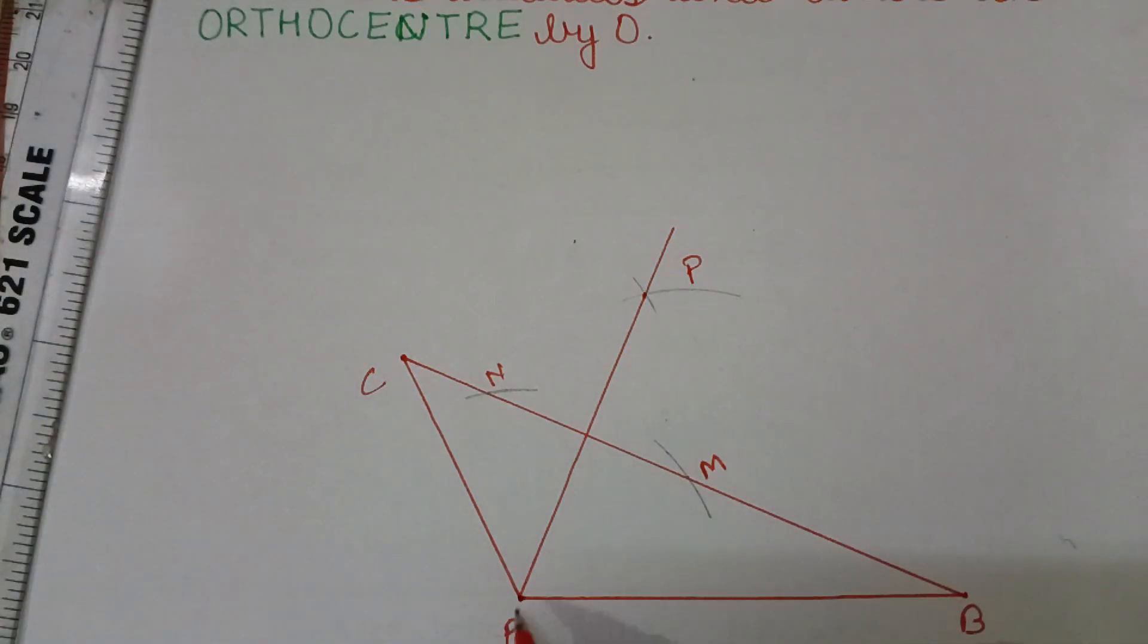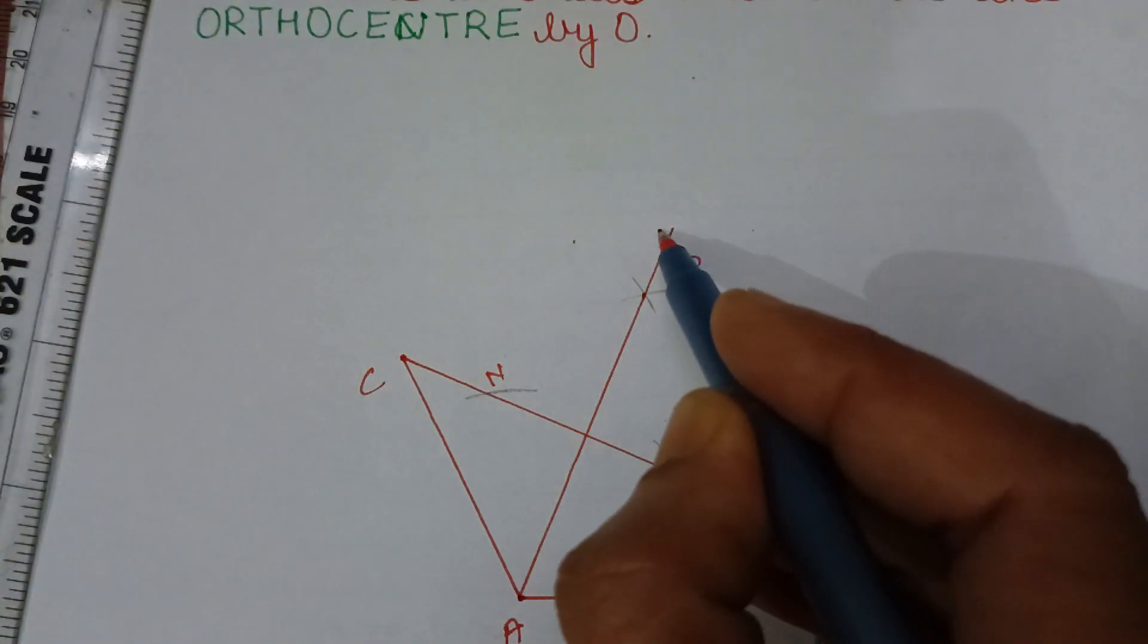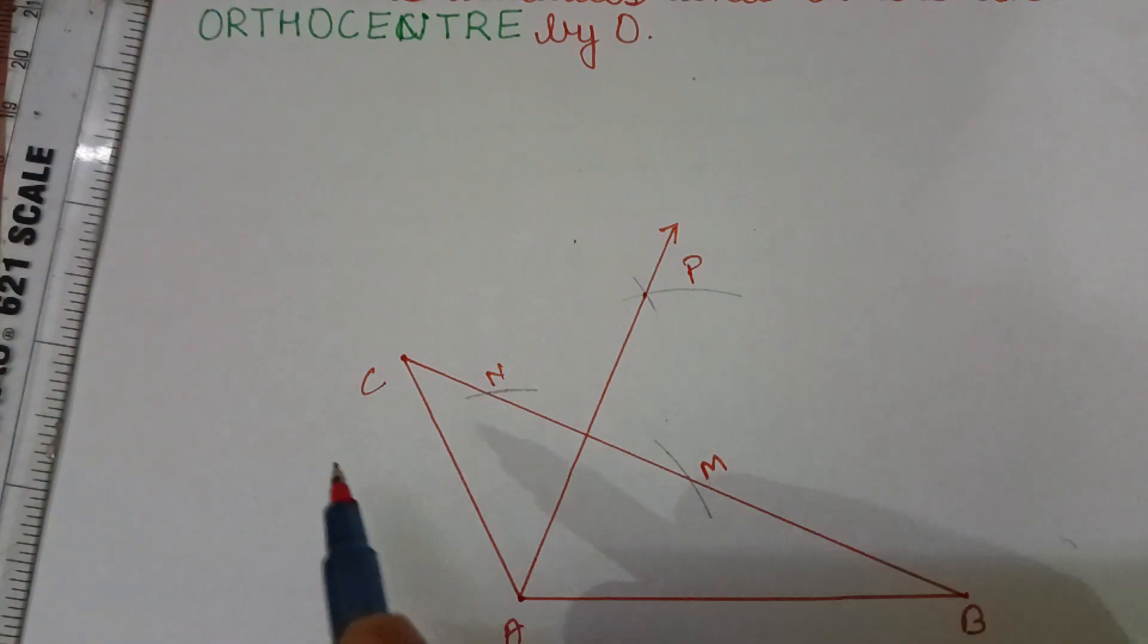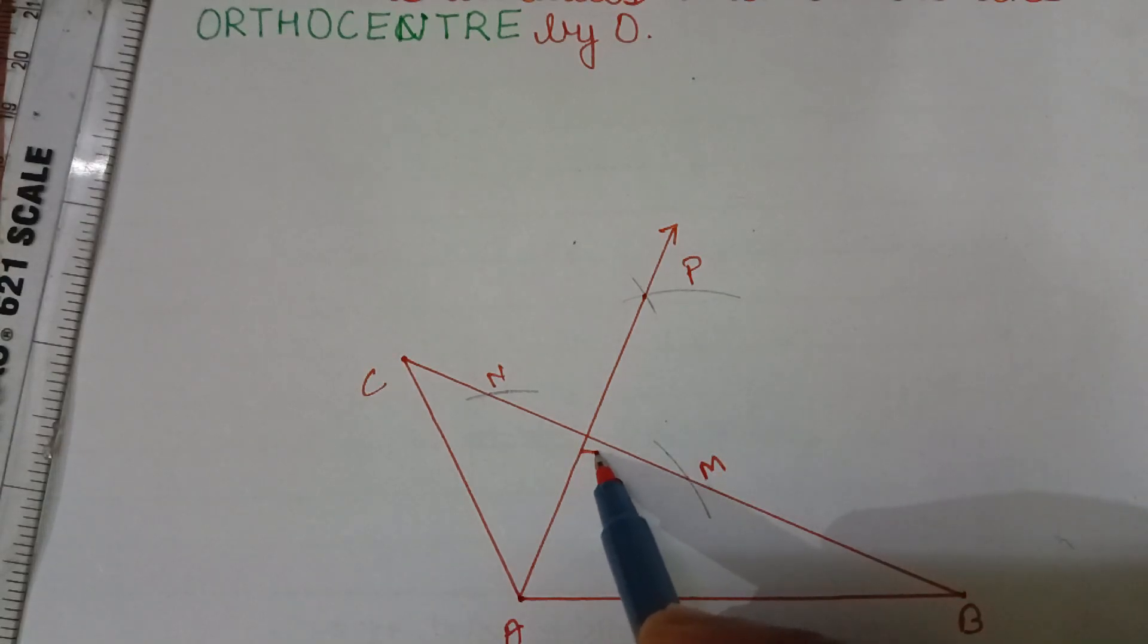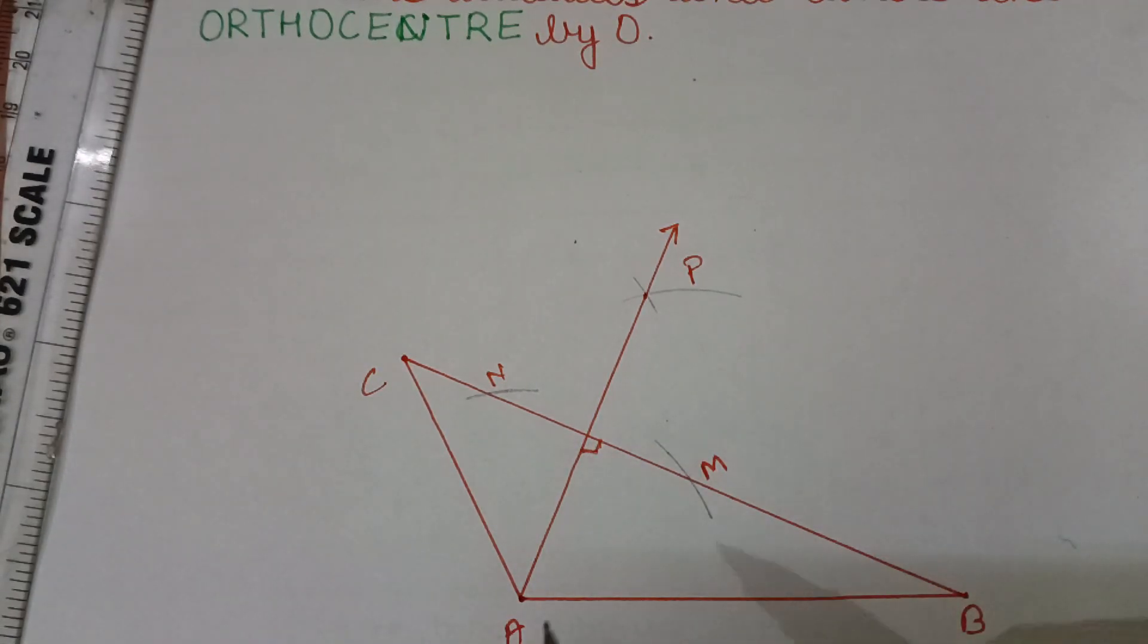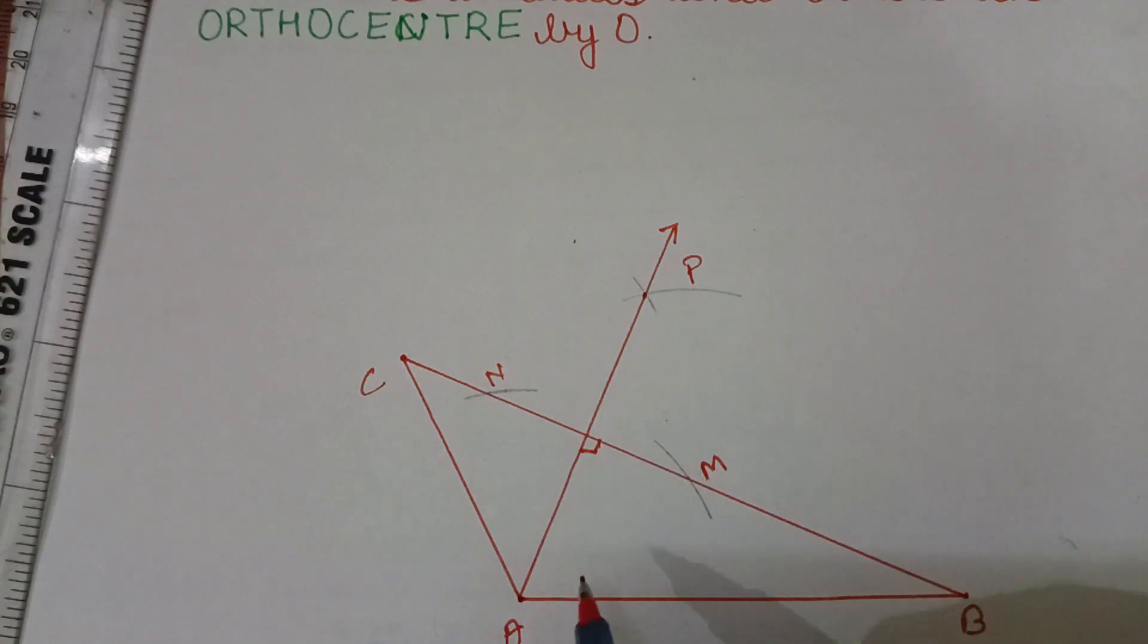Then, this A-P is the perpendicular on side BC. You make here the symbol of perpendicular. Now, from vertices B, draw the perpendicular on AC.